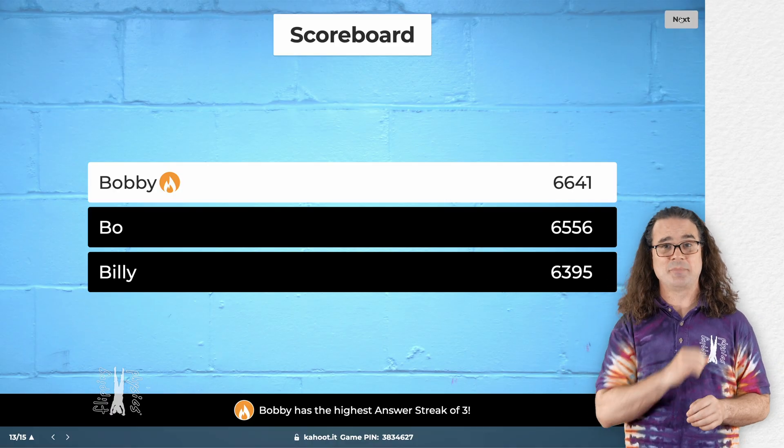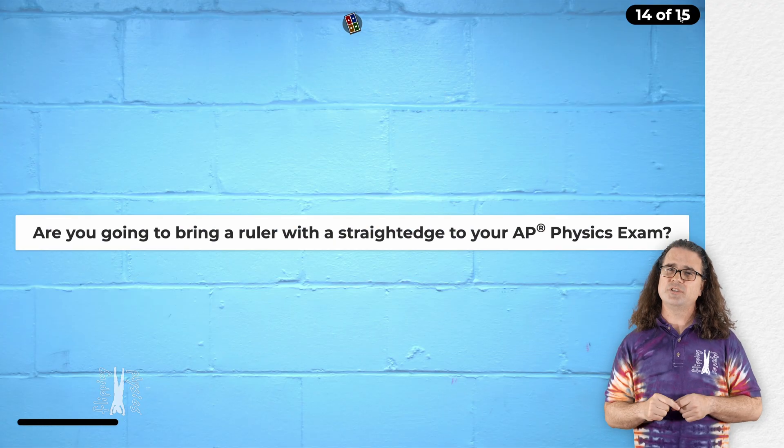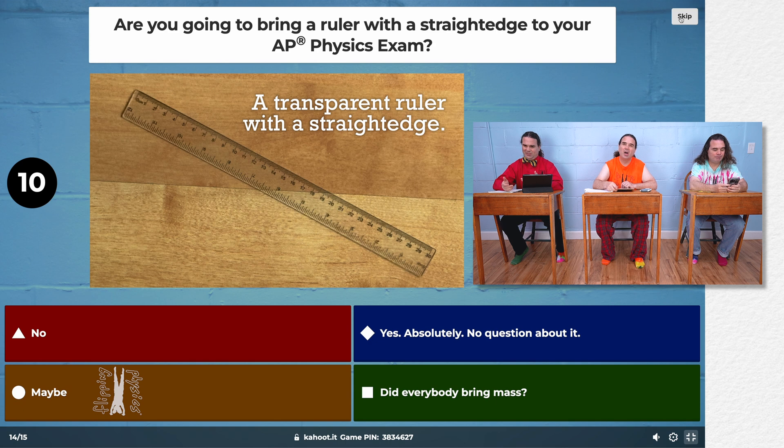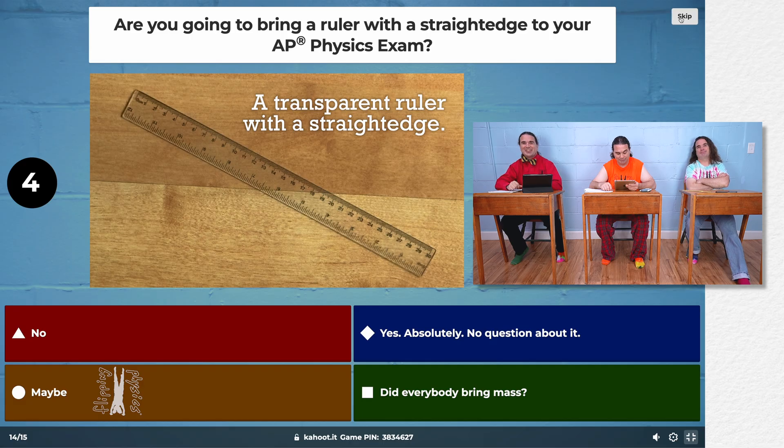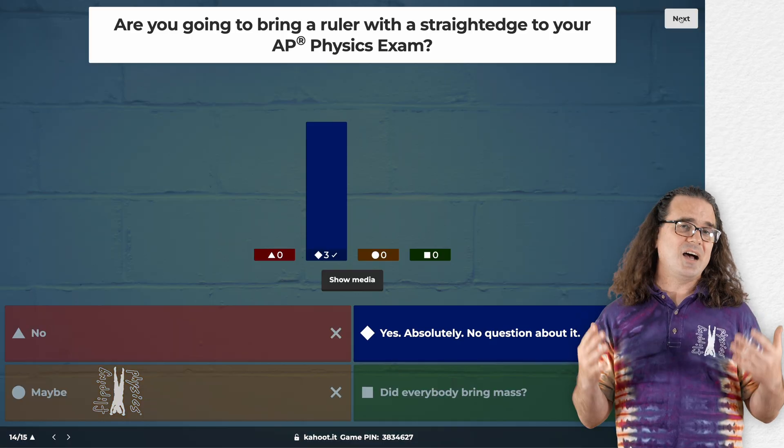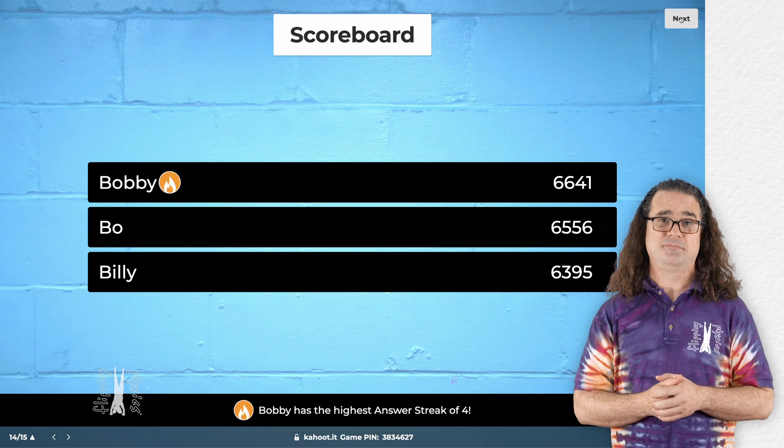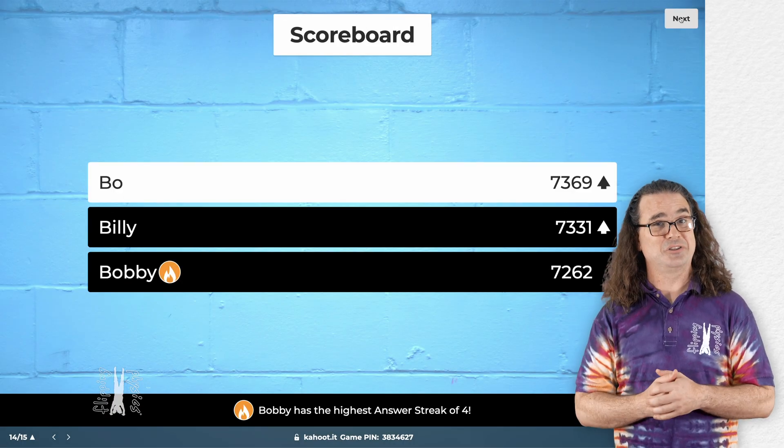Now the penultimate question. Are you going to bring a ruler with a straight edge to your AP physics exam? Of course you are. And maybe even a transparent one. And Bo took the lead. Yep.